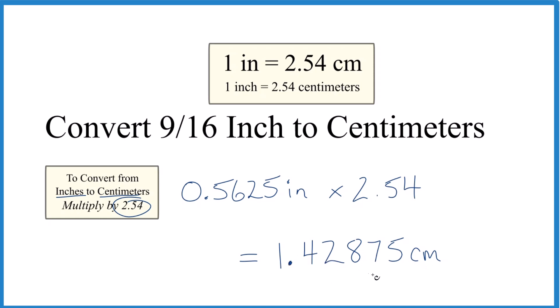You might round this to 1.43 centimeters if you want. If you're thinking about the units, 2.54 centimeters per inch, that's centimeters per inch. So when we multiply, the inches cancel out and we're left with centimeters.